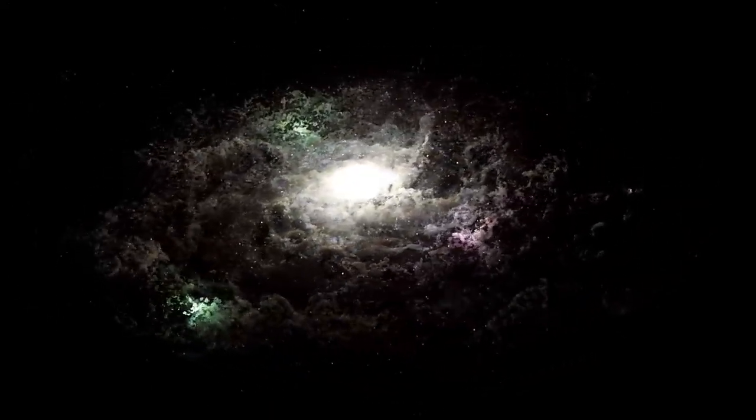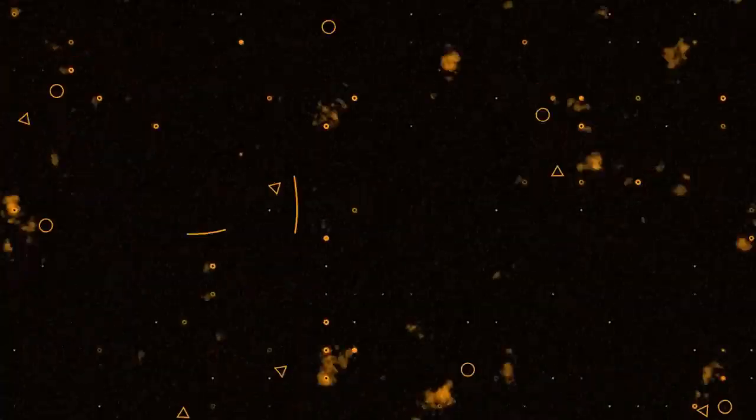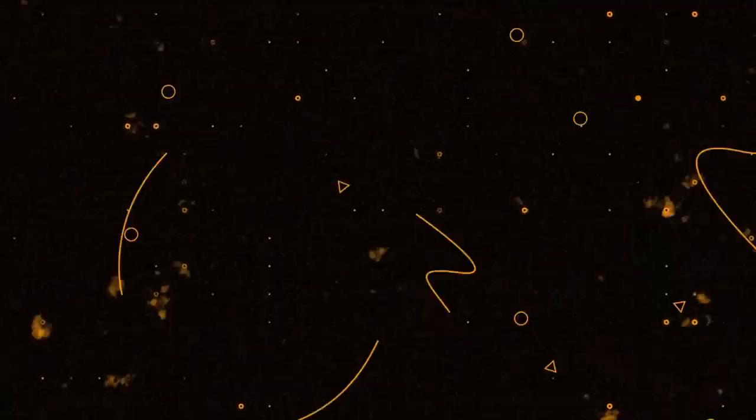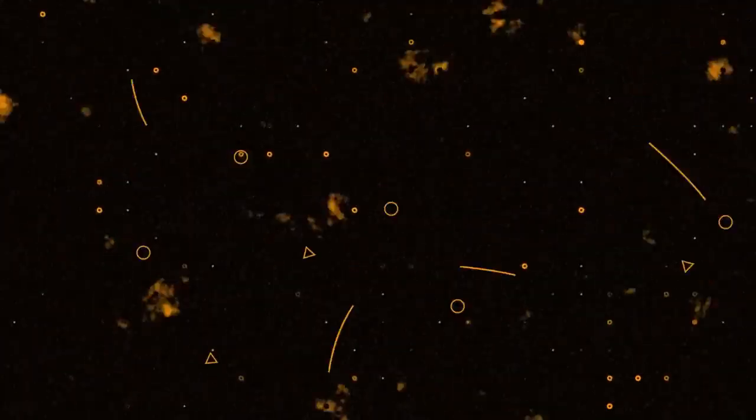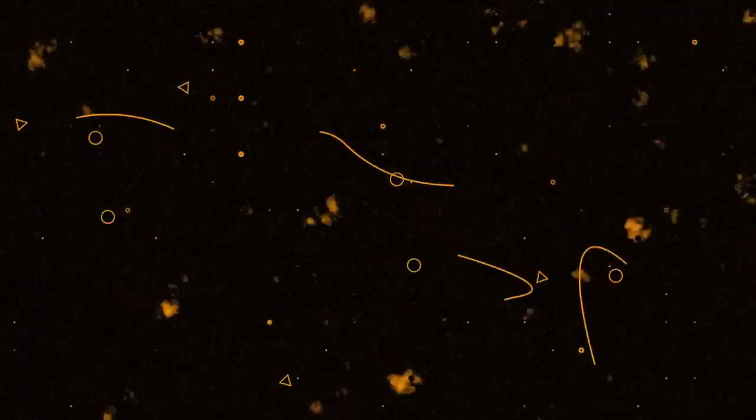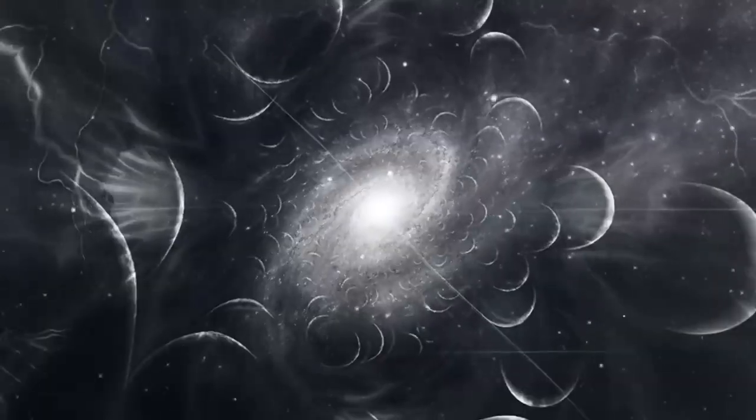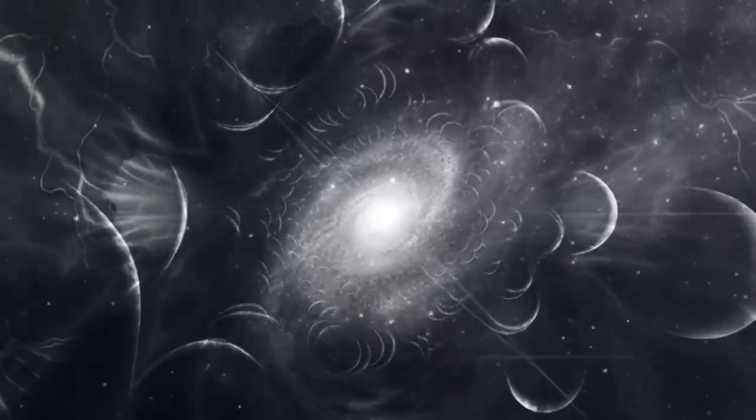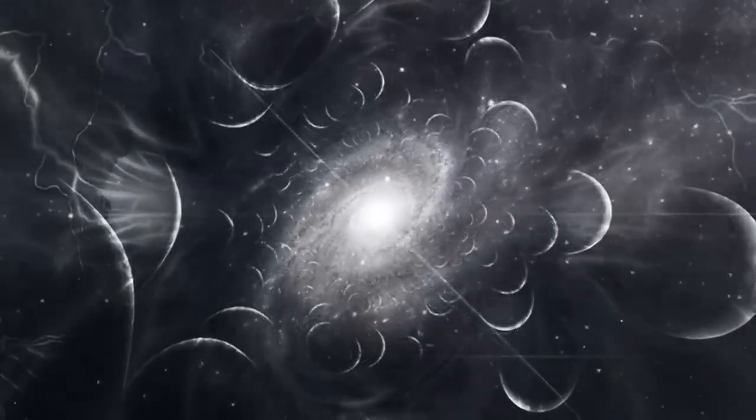The James Webb Telescope has also illuminated one of the universe's most elusive enigmas, dark matter. By observing gravitational lensing, where massive cosmic clusters bend light from objects behind them, Webb has helped create high-resolution maps of dark matter's distribution.